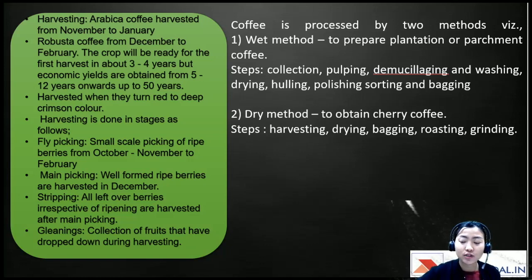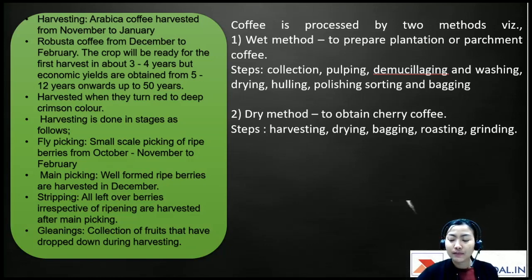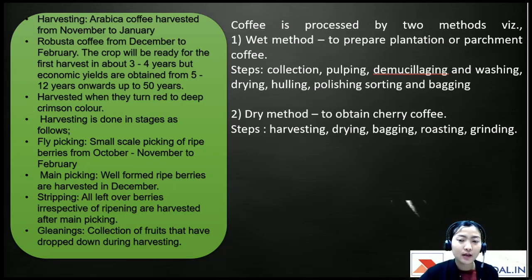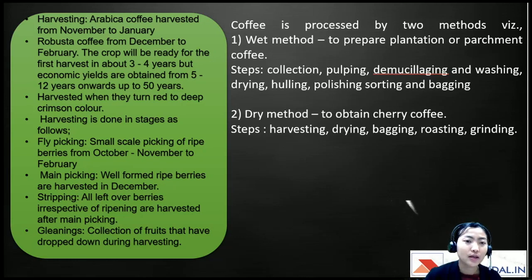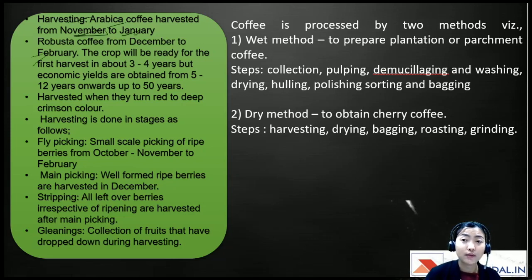Coffee plantation crops require good processing — just give the processing steps one read for a basic understanding. For harvesting: arabica coffee is usually harvested during November to January, and robusta coffee from December to February.